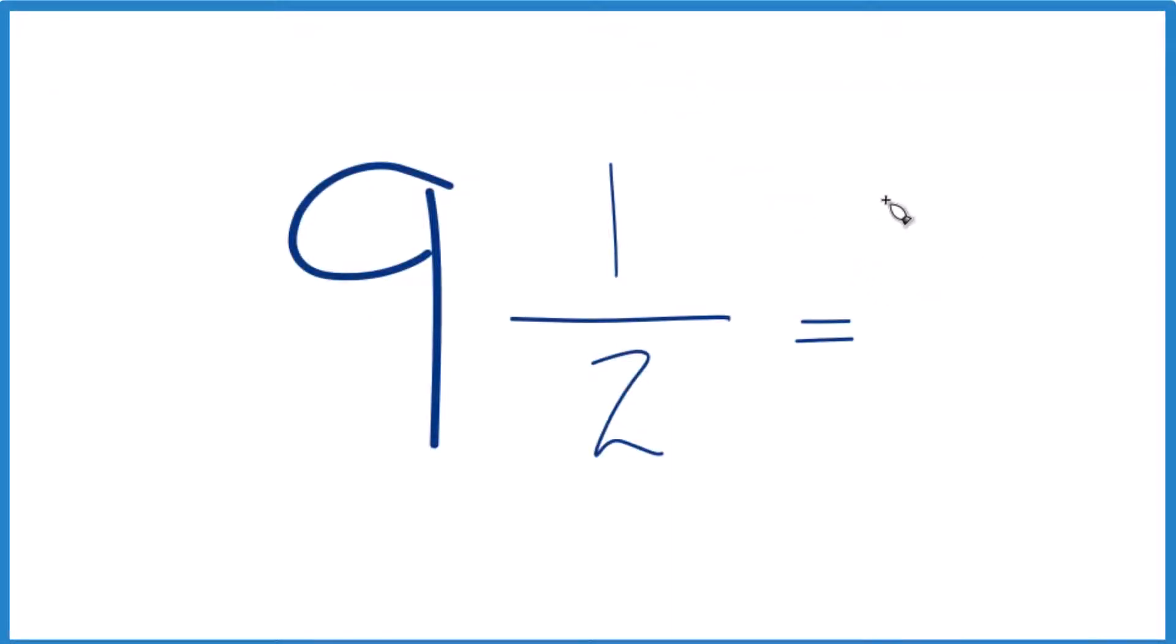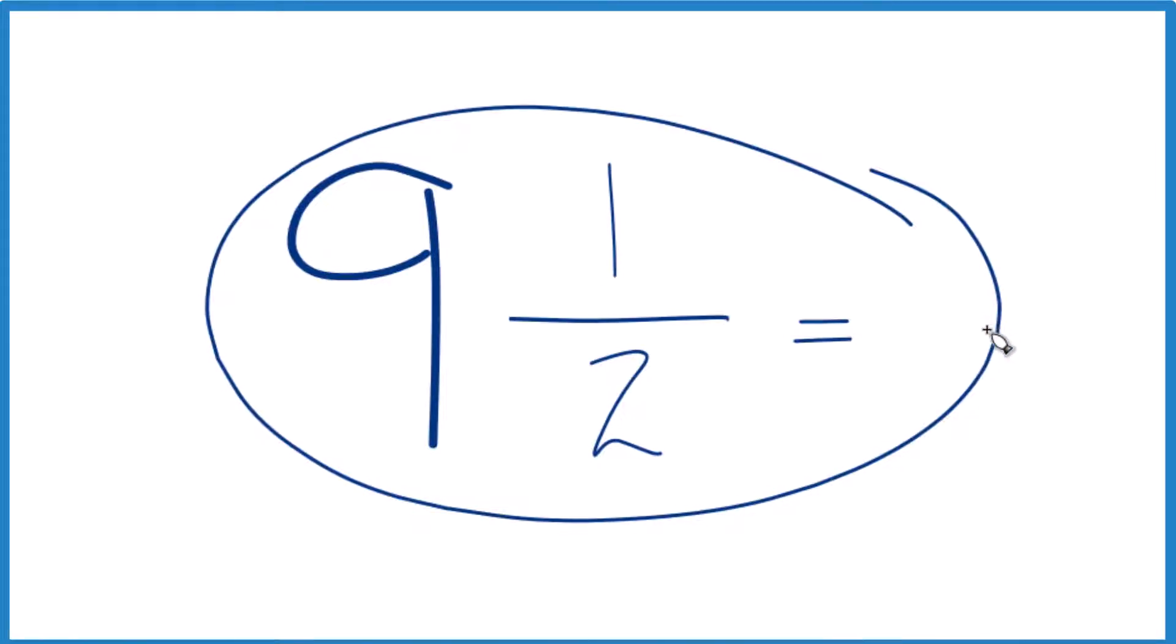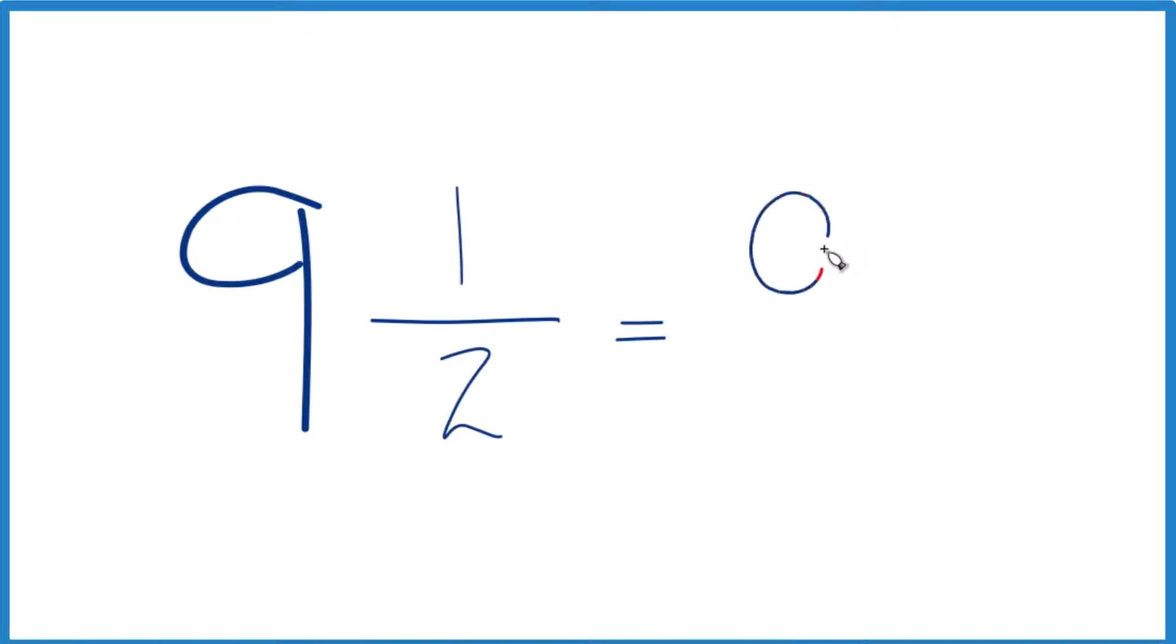Let's convert the fraction 9 1⁄2 to a decimal. So the first thing we could do here, we could just call this 9, because that's a whole number. So we just leave that as 9, and then convert 1⁄2, the fraction 1⁄2, to a decimal.